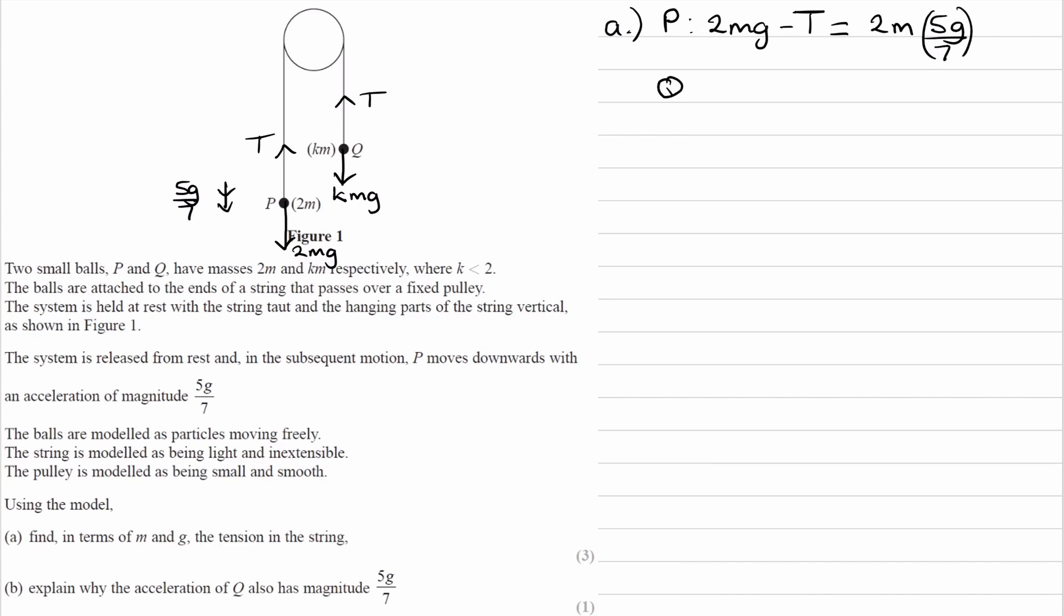And then for Q, its acceleration is upwards, 5g over 7. So then the tension must be the bigger force. If it's accelerating upwards, the resultant force must be upwards. t must be the bigger force. And then t minus kmg will be the overall upwards force. And that will be equal to the mass of Q, which is km, multiplied by its acceleration, 5g over 7.